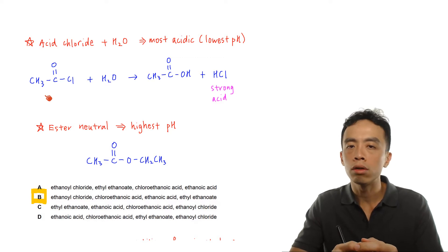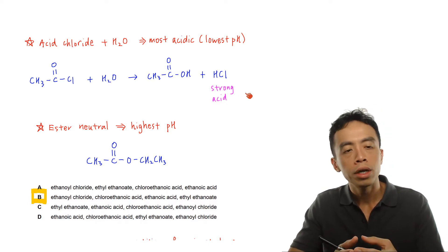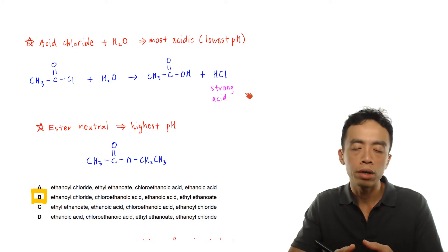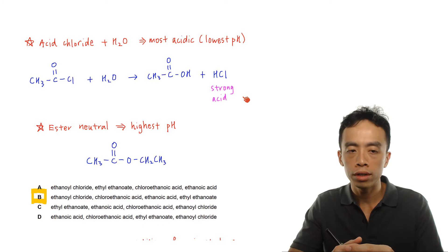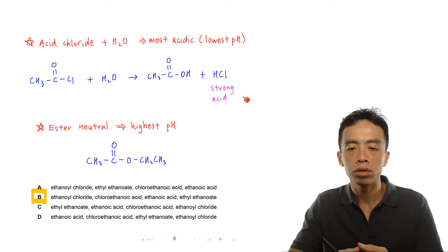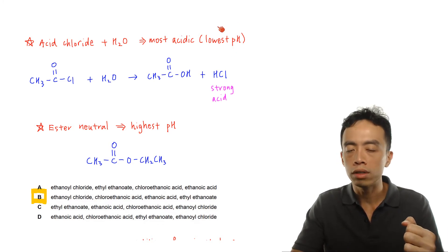By itself acid chloride is neutral, but if you throw this inside water it will react with water to give me carboxylic acid and HCl. Acid chloride is a very reactive version of carboxylic acids, so it's reactive enough to react with water at room temperature. HCl is a strong acid, so it will be fully dissociated to give me a very high concentration of H⁺ in solution. Therefore, the pH of this solution is expected to be the lowest.